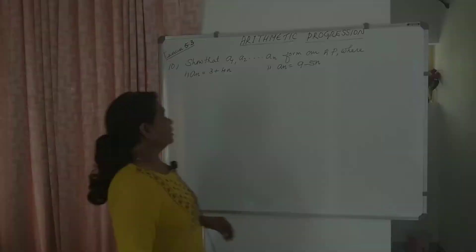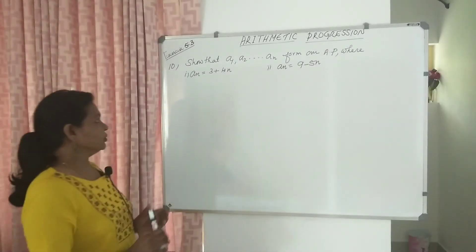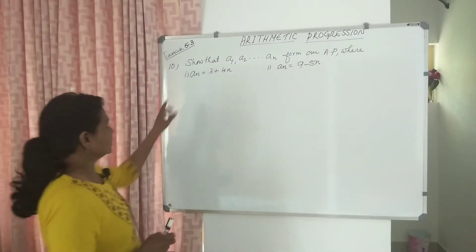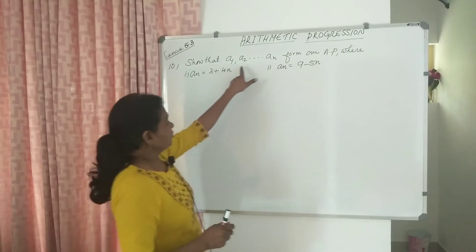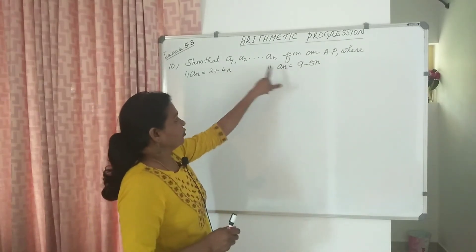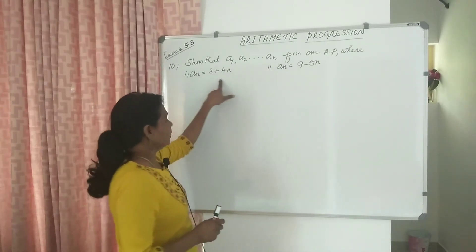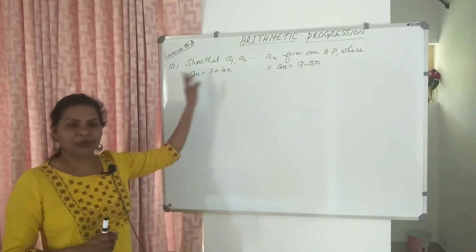Show that A1, A2, A3 form an AP where An is 3 plus 4N.